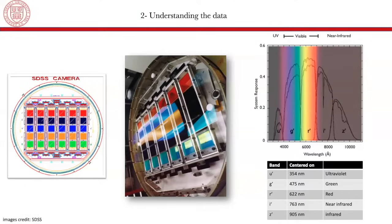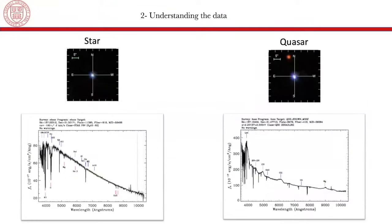However, these measurements are not enough to distinguish between different objects. As we can see here, on the left, we have a star in the Milky Way, and on the right, we have a very distant quasar. However, when we see them using photometric measurements, they look very similar. So we cannot tell apart stars from quasars solely based on photometric measurements. So we need a second type of measurement, which is the spectroscopic measurement.